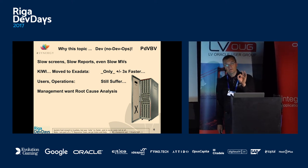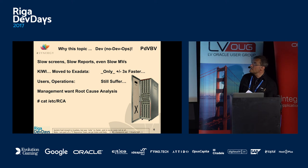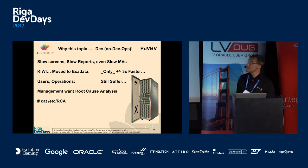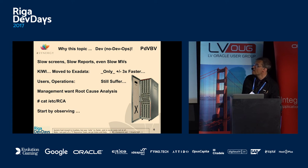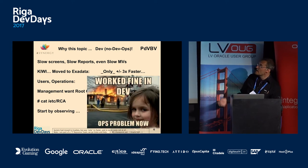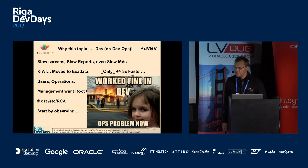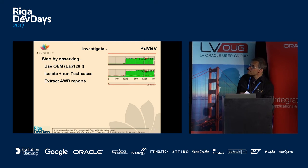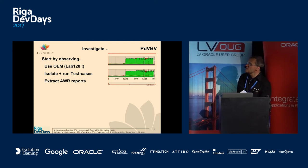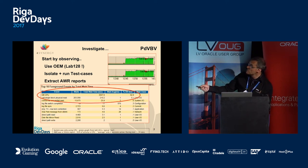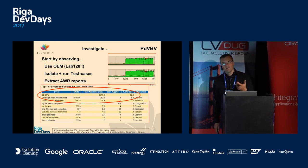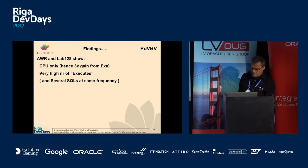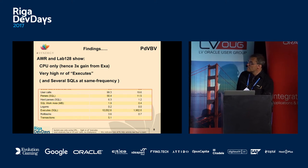User operations still suffered, users complained, and management wanted a root cause analysis. You have to start by observing your system because it worked fine in dev. We investigated and found CPUs going through the roof. OEM, lab128, and AWR all told us the same thing: DB CPU was at 92% of the time. Everything was on the CPU — the system did nothing but calculate.